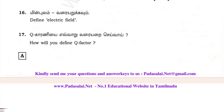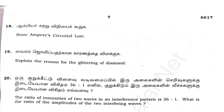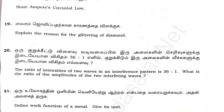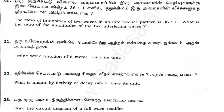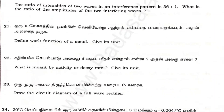Questions 16 and 17: How will you define the Q factor? State Ampere's circuit law. Explain the reason for glittering of diamond. Question 21: Define work function of metal and give its units. Question 22: What is meant by activity or decay rate — give its units. Question 16/23: Draw the circuit diagram of a full wave rectifier.